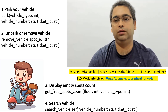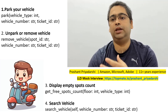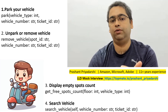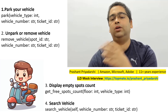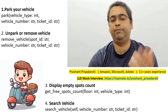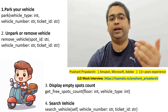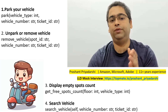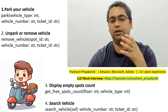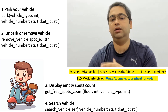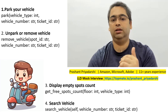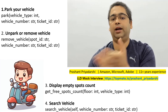The first requirement is to park a vehicle. When a customer comes, you assign them a parking spot based on vehicle type — two-wheeler or four-wheeler. They provide their vehicle number, which is the license plate number. Assume a ticket ID is already generated. I'm writing the exact method names for clarity. The second core feature is un-park or remove the vehicle. Once parked, a customer can provide their spot ID, vehicle number, or ticket ID to remove their vehicle.